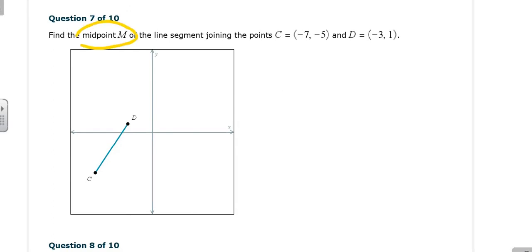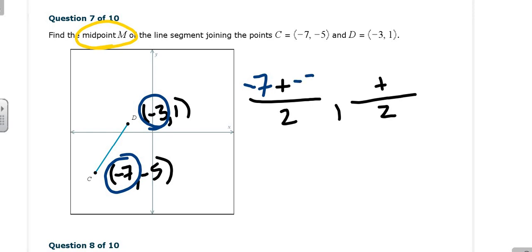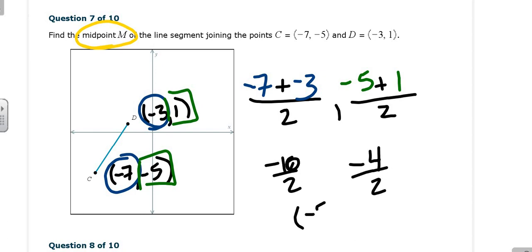It says find the midpoint of the segment joining C at negative 7, negative 5, and D at negative 3, 1. So again, how do you find the midpoint? You add the X's, divide by 2, add the Y's, divide by 2. Notice I circle my X's and I box my Y's. And your midpoint is going to be negative 5, negative 2. What's really nice about this is you can physically graph these, and you can see it actually works. So negative 5 would be about right here, negative 2, and lo and behold, that actually looks like the midpoint of the segment.